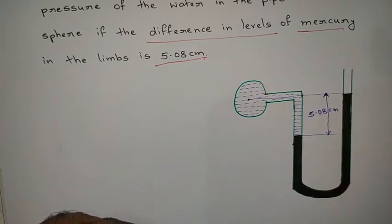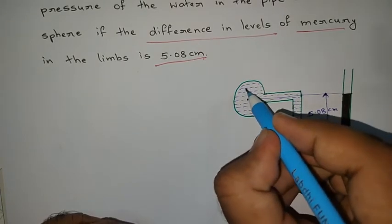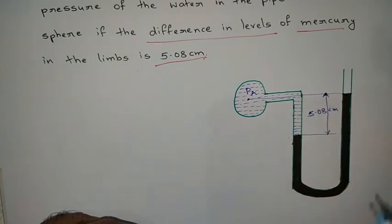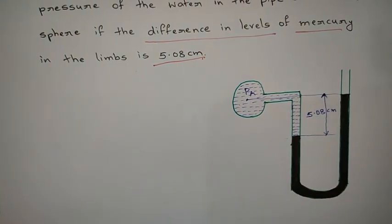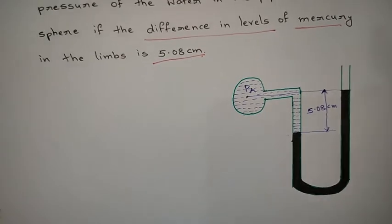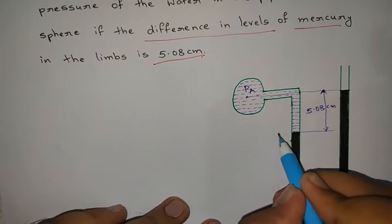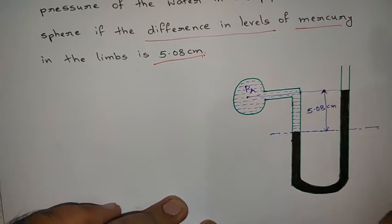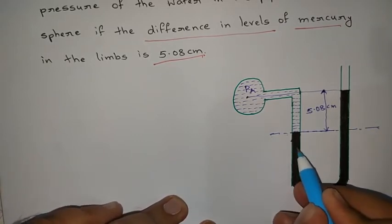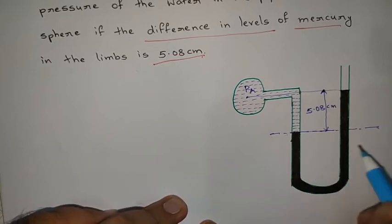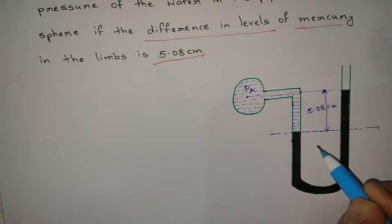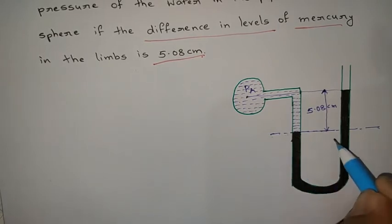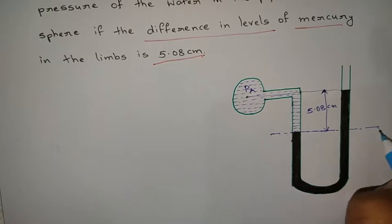The difference in mercury levels is 5.08 centimeters, and he is asking us to find the pressure of water in the pipeline — that is P_A. To find this, first of all let us consider a datum line. I am considering the datum line here, below which both the left and right limbs are completely filled with mercury.